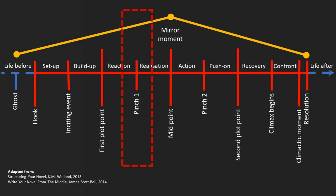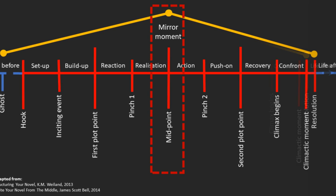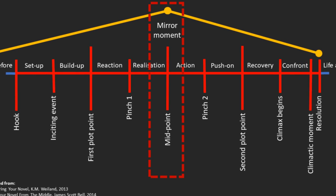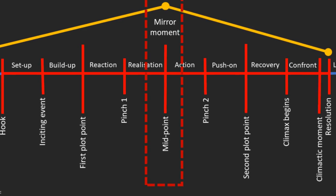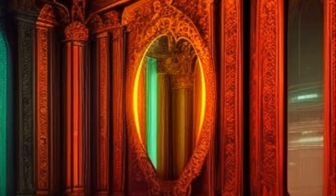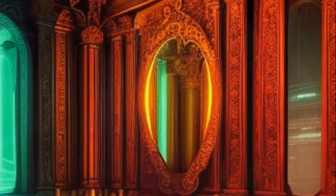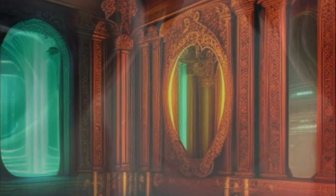The next big plot beat is the midpoint. It's what James Scott Bell calls a 'mirror moment' in his book Write Your Novel From The Middle, and he suggests shaping your whole plot around it. It's the moment when the protagonist takes a long hard look in a literal or metaphorical mirror and becomes aware of the thematic truth driving their character arc, though they're not yet ready to fully embrace it.